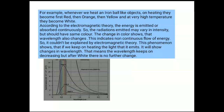According to electromagnetic theory, energy is emitted or absorbed continuously, so the radiations emitted may vary in intensity but should have the same color — the red color intensity may vary but the color should remain red. So the change in color shows that wavelength is changing, implying a non-continuous flow of energy, which could not be explained by EM theory. This phenomenon shows that as we keep heating, the wavelength keeps on decreasing.